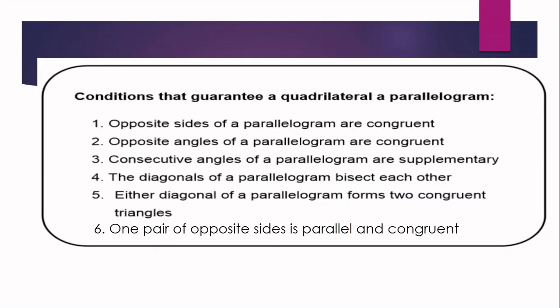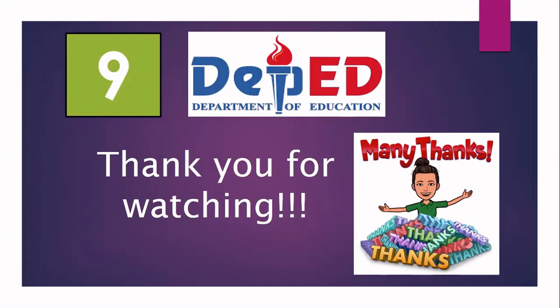These are the six conditions that guarantee a quadrilateral is a parallelogram: one, opposite sides are congruent; two, opposite angles are congruent; three, consecutive angles are supplementary; four, diagonals bisect each other; five, each diagonal forms two congruent triangles; and six, one pair of opposite sides is parallel and congruent. That is the lesson for today. Thank you for watching.